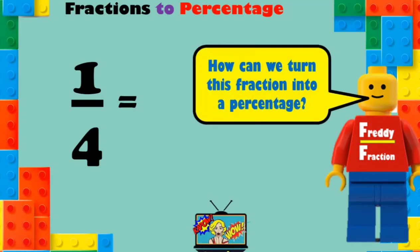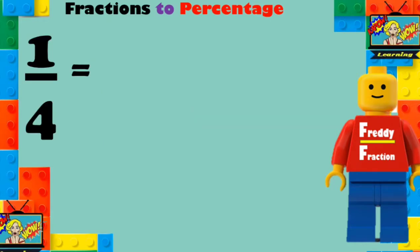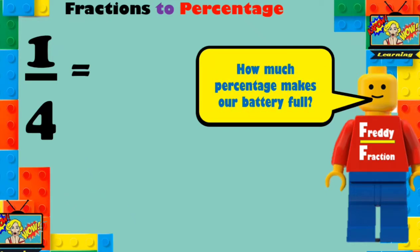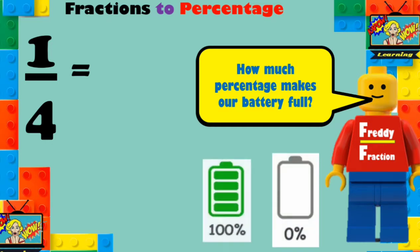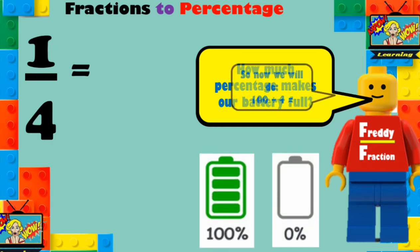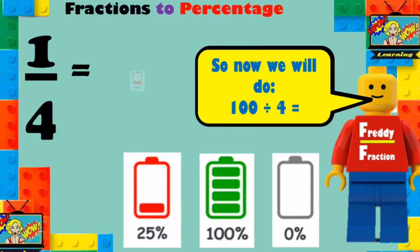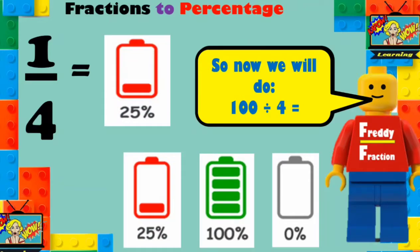Here we have one quarter. How can we turn this fraction into a percentage? We need to turn this fraction into a percentage, and this is how we do it. How much percentage makes our battery full on our phone? It's 100 percent! So what we will do is divide that 100 by our denominator, the 4. So 100 divided by 4 is equal to 25 percent! One quarter equals 25 percent! That's totally awesome!